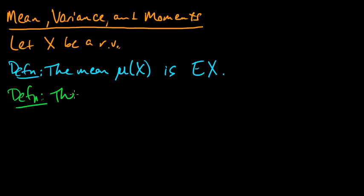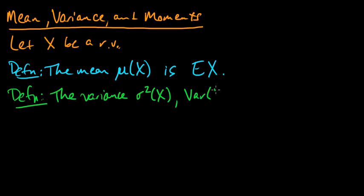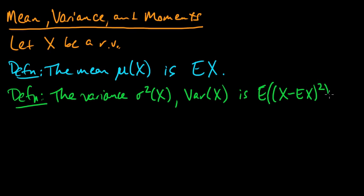Next, the variance. We often denote the variance as sigma squared, or sometimes write it as var of x. The variance of x is defined as the expectation of x minus its mean, the whole quantity squared. You square it first and then take the expected value. Sometimes people drop the parentheses, so you have to make sure you parse the expression correctly. Usually you can tell from context what the person means.